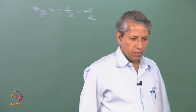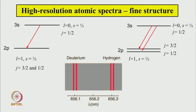Let us see how this explains the various experimental observations. In the last lecture I showed the fine structure of the spectrum of hydrogen and deuterium atoms — 3s and 2p were connected by only one transition. Now, l = 0 for the 3s state and spin s = 1/2 together give a total angular momentum j = 1/2. For the 2p state, l = 1 and s = 1/2 combine to give j = 3/2 and j = 1/2.